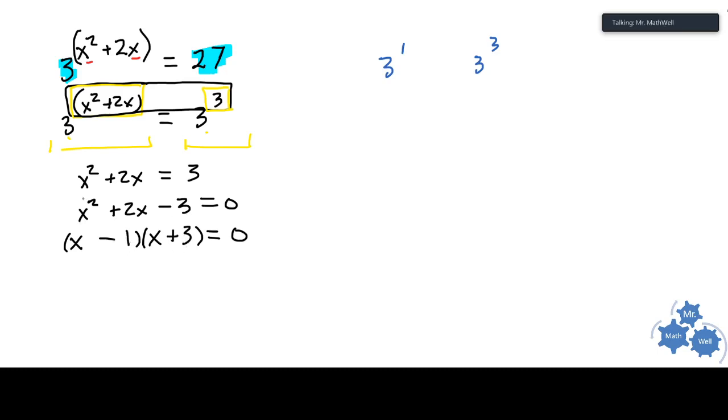So a quick FOIL: x squared plus three x minus x gives us two x, and then minus one times three gives us a negative three. So here's the factored version.